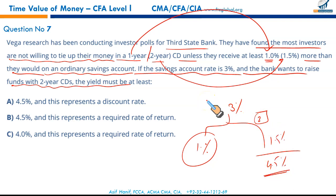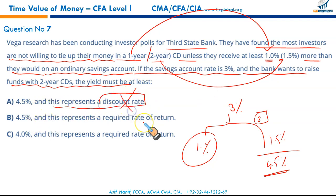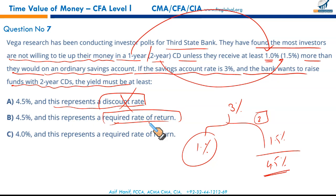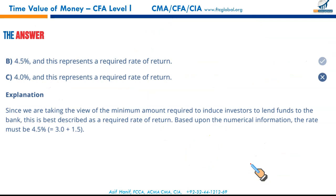It's a straightforward question — 4.5%. This represents a required rate of return, not a discount rate. It is forward-looking, taken from the investor's point of view. Investors are induced by offering them a certain rate of return — from the investor's perspective, it is the required rate of return. So 4.5% required rate of return, B is the correct option.